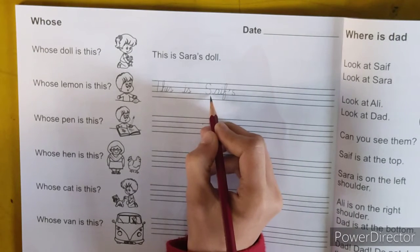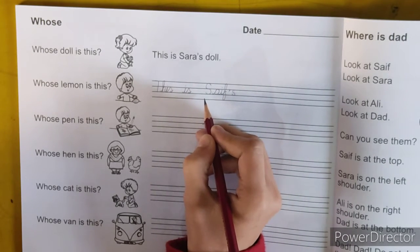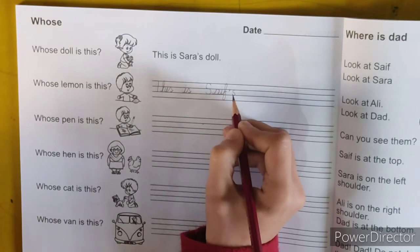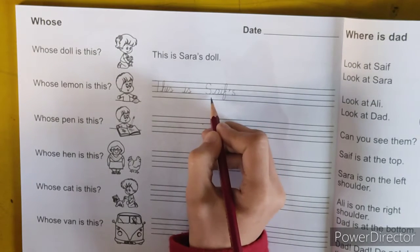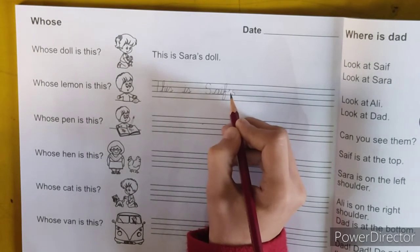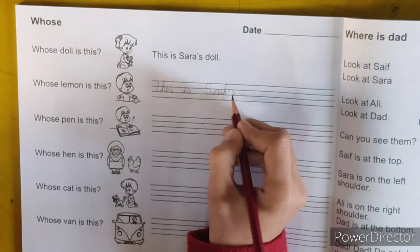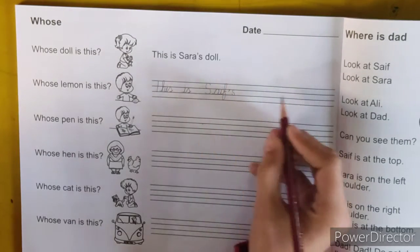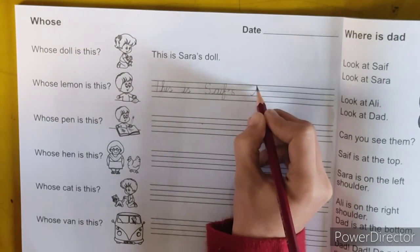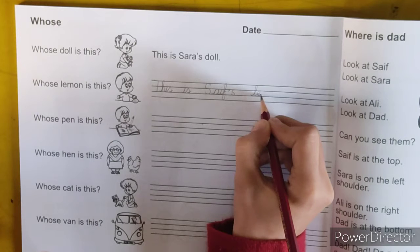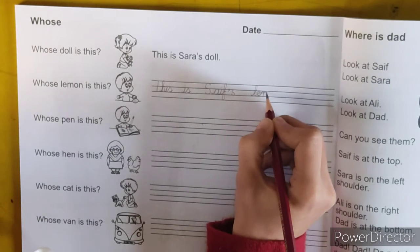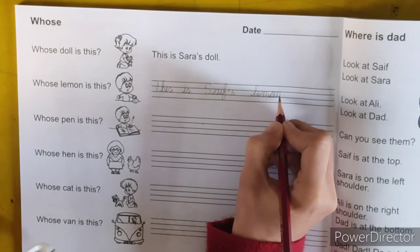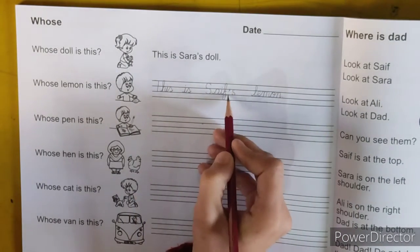This noun's first letter is in capital. Here, apostrophe S means possession — Sara's. This is Sara's lemon. Here we will use Sara's. This is chef's lemon.